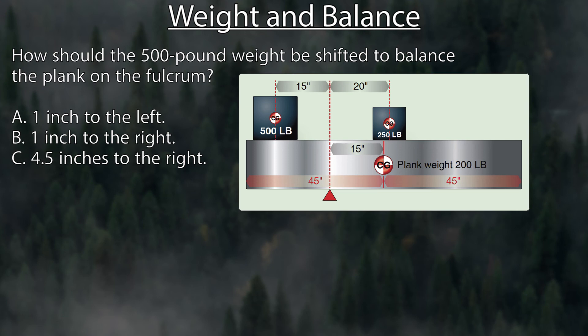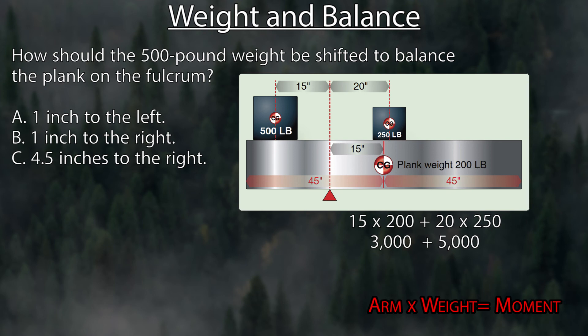To solve this, figure out how much force is on each side of the fulcrum. On the right side: 15 inches times 200 pounds gives a moment of 3,000 for the plank. Then 20 inches times 250 pounds gives a moment of 5,000, for a total combined moment of 8,000 on the right. On the left: 15 times 500 gives 7,500.